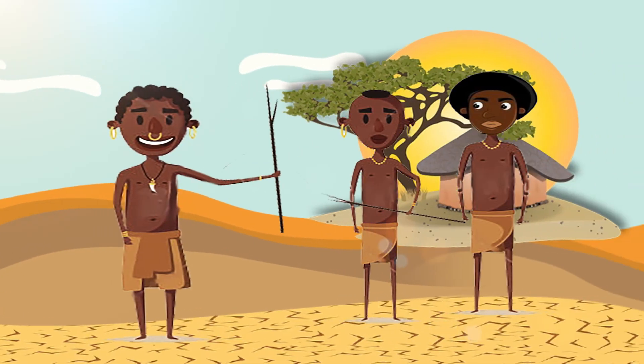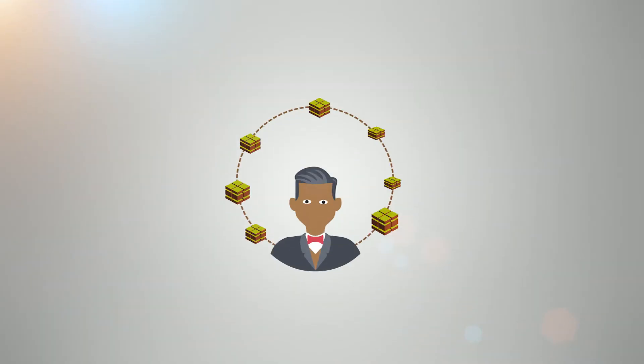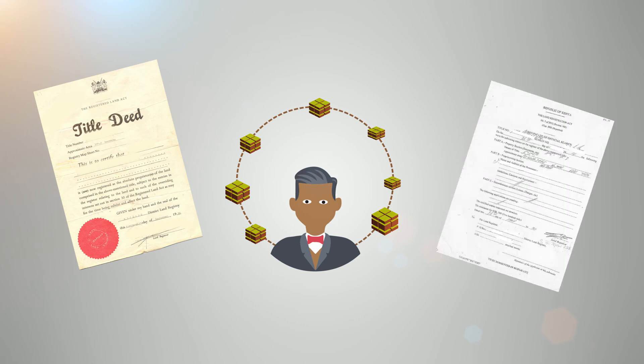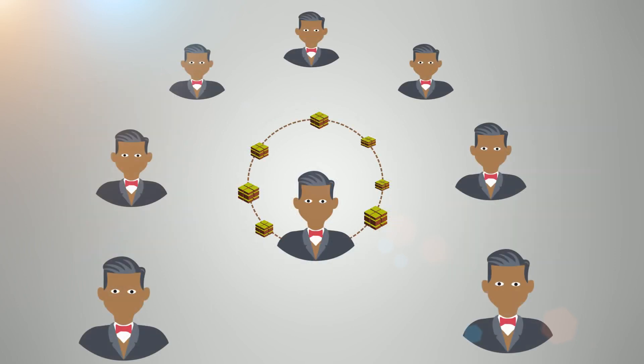This new method replaced the traditional way of managing land records. It introduced the concept of hard evidence in the form of paper records like title deeds, land searches, land consents for transfer, etc. Although more efficient, the process made it easier for land corruption to grow deep roots in the land registry system.